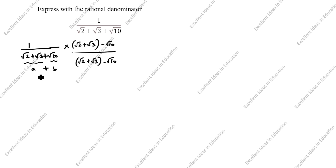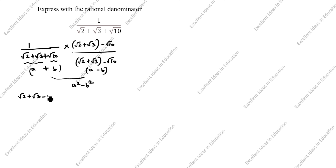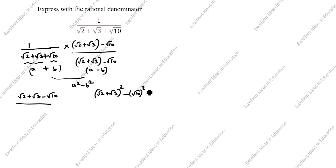You see the denominator has the form (a plus b)(a minus b). The formula for a plus b times a minus b is a squared minus b squared. So the next step gives us (root 2 plus root 3 minus root 10) divided by: a squared is (root 2 plus root 3) whole squared minus b squared, which is root 10 squared.